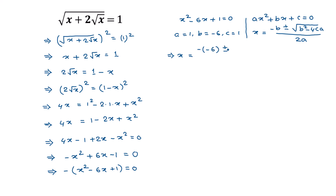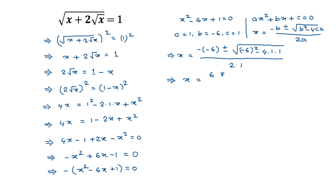So x equals 6 plus or minus square root of b squared, which is negative 6 squared, minus 4 times c times a, where c is 1 and a is 1, all over 2 times a which is 2 times 1. Negative 6 squared is 36, and 4 times 1 times 1 is 4.